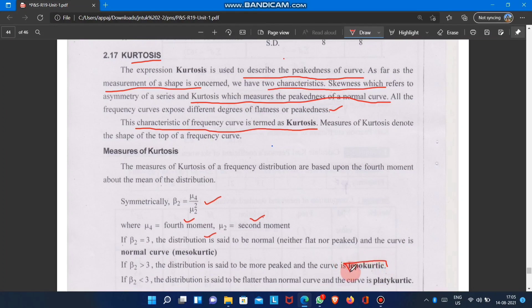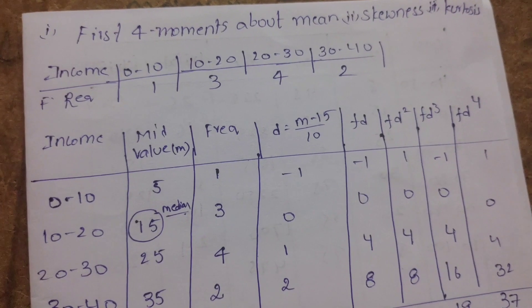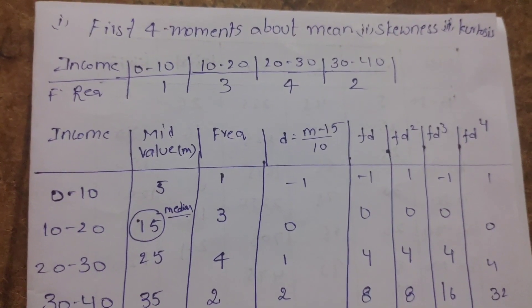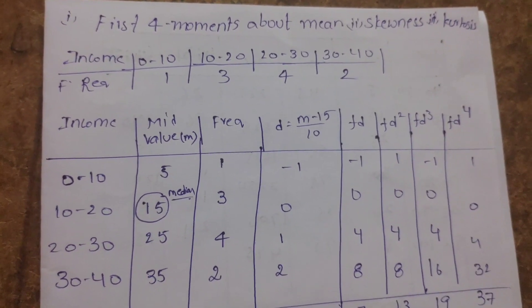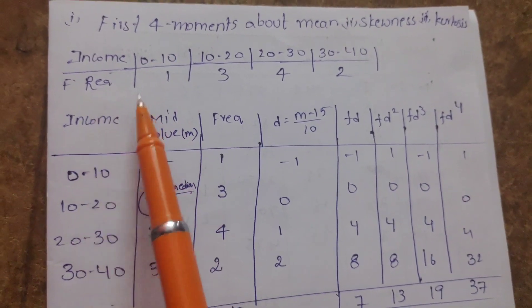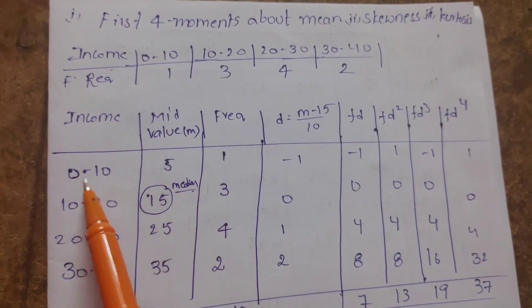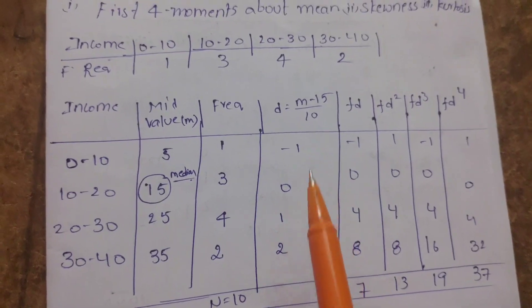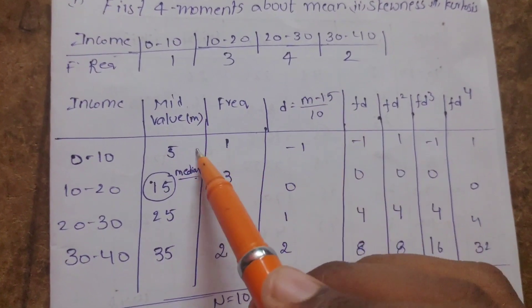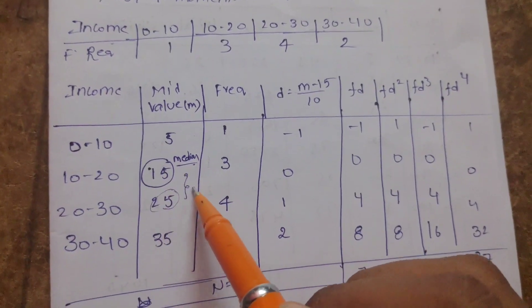Where mu4 is the fourth moment and mu2 is the second moment. We have leptokurtic curve and platykurtic curve. Beta 2 greater than 3 is leptokurtic, beta 2 less than 3 is platykurtic. Here's an example: calculate first four moments about mean, then calculate skewness and kurtosis from the table.